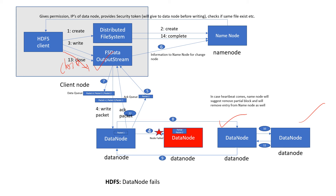Once the failed data node comes back online — let's say in the future it comes online and its heartbeat is received — this heartbeat will be informed to the name node. The name node will then clean the required information from that data node and from its metadata. This is how failure is handled on the HDFS data node.